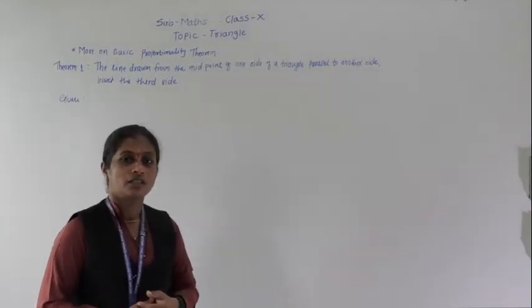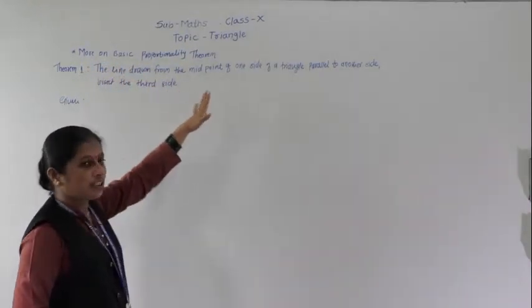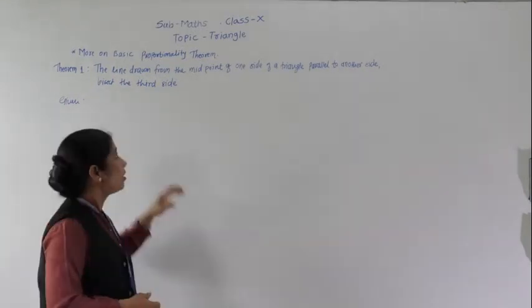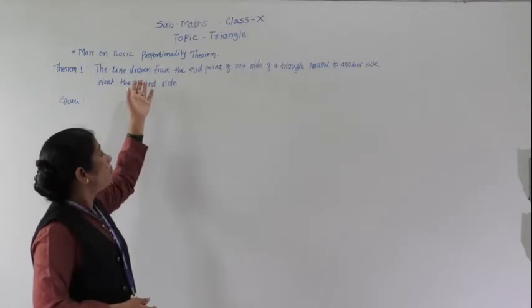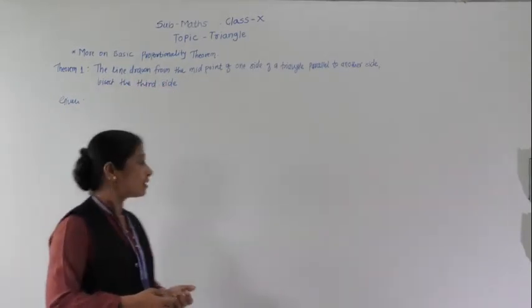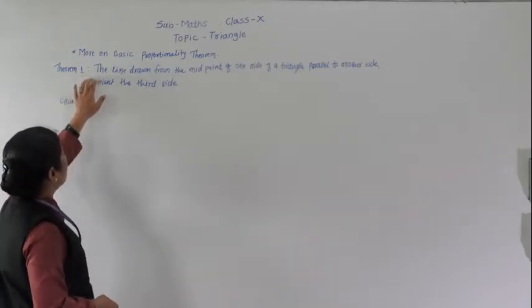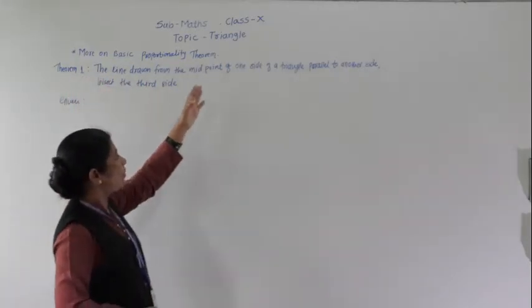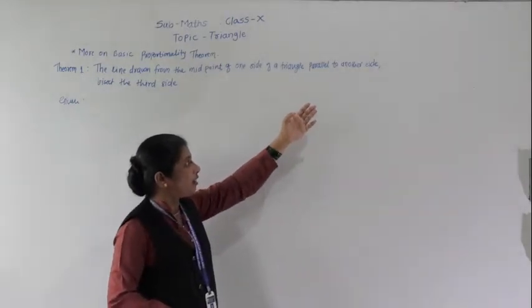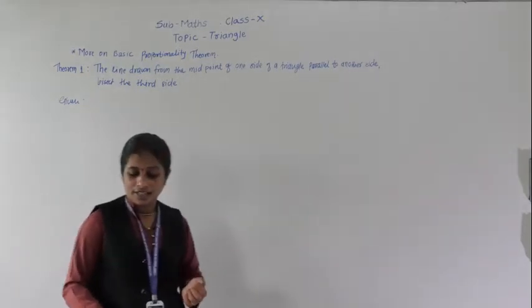Good morning students. Today we are going to see more on the Basic Proportionality Theorem. In this section we shall discuss more properties on the Basic Proportionality Theorem. The first property: a line drawn from the midpoint of one side of a triangle, parallel to another side, bisects the third side.